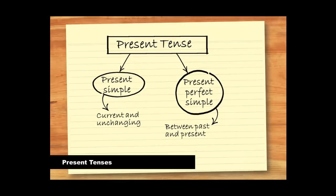So, we've looked at the present simple for things that are current and unchanging, and the present perfect simple for things that are located between the past and the present.